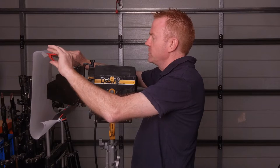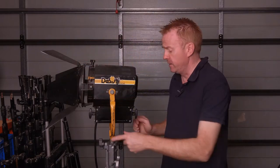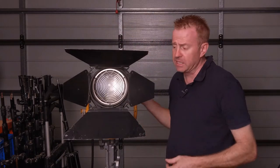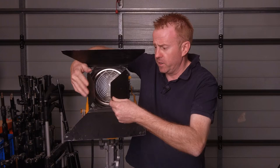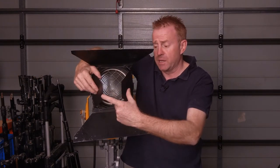Now one of the problems we used to commonly get with choking a light was I'd get an assistant who would take the choking too far. So basically you want to choke it all right, you don't want to suffocate it. You don't want to cover the beam over, so never cover the center of the beam with your barn doors.